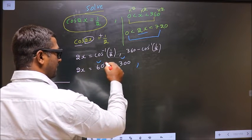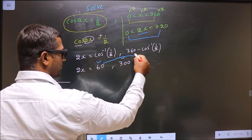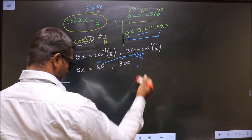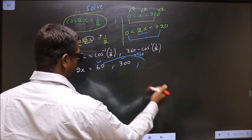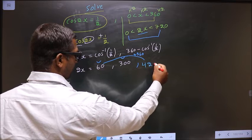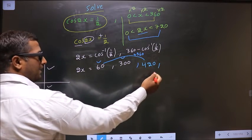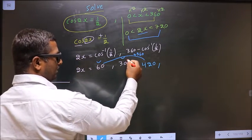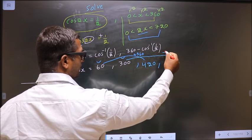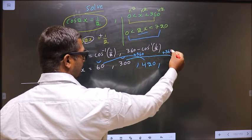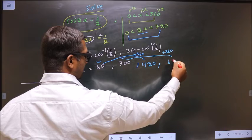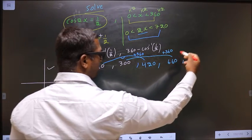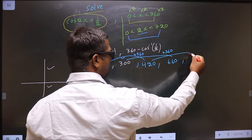To get another angle, add 360 to 60 to get 420. To get another angle, add 360 to 300; it will become 660.